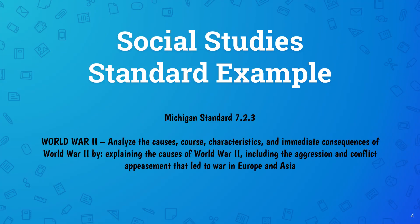Let's look at an actual example. This is a social studies standard from Michigan 2018 standards 7.2.3 — World War II: analyze the causes, course characteristics, and immediate consequences of World War II by explaining the causes including the aggression, conflict, and appeasement that led to war in Europe and Asia. That's the standard we're building a lesson around.